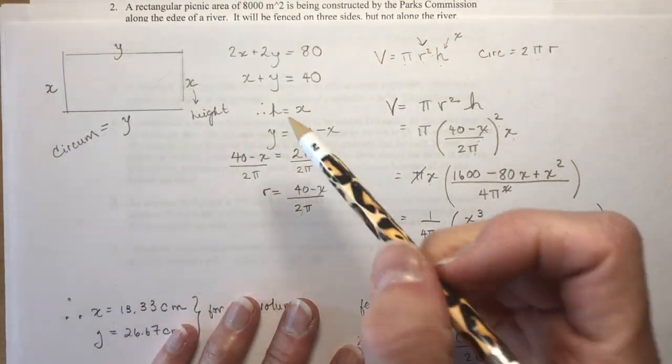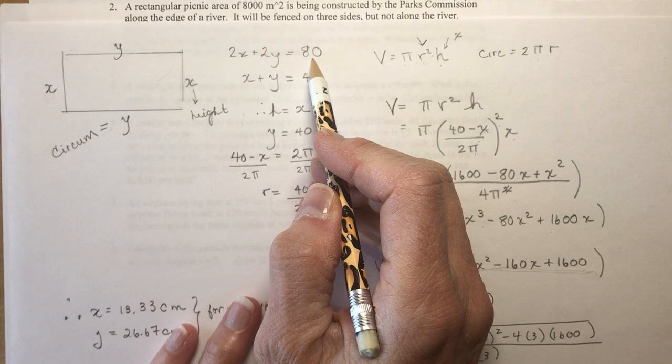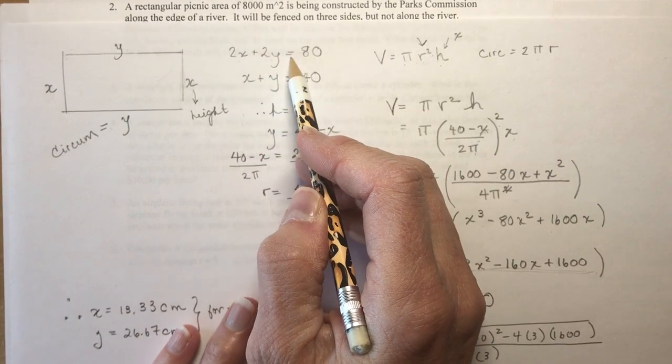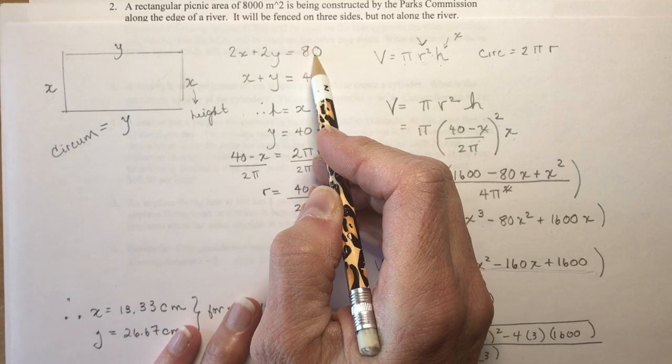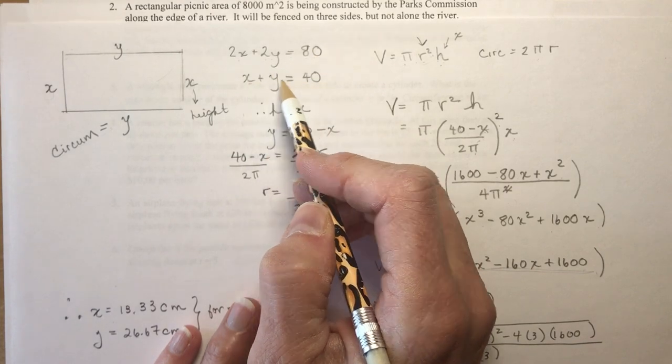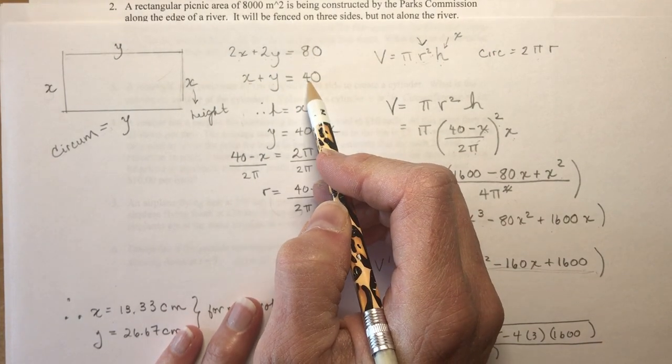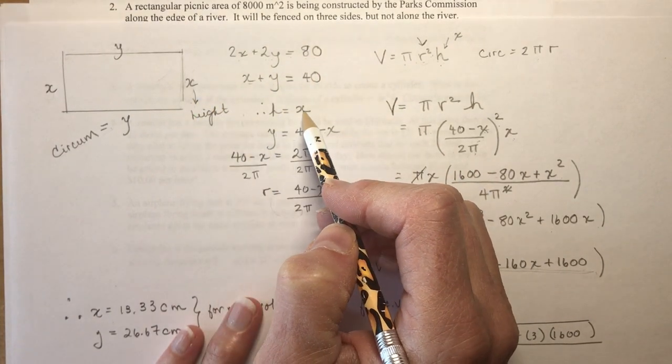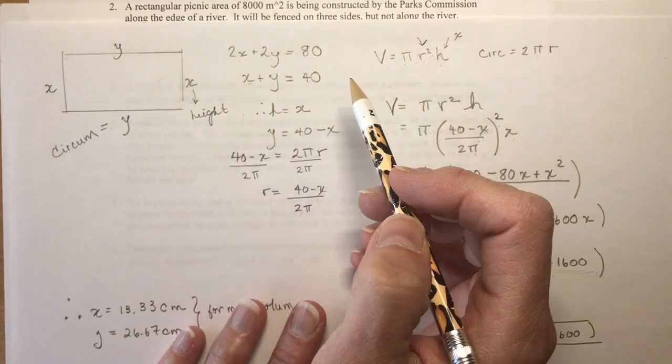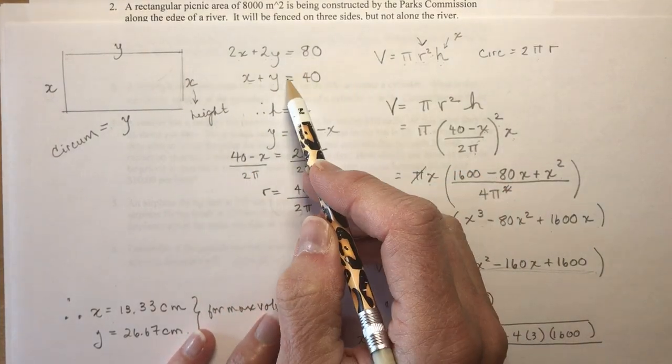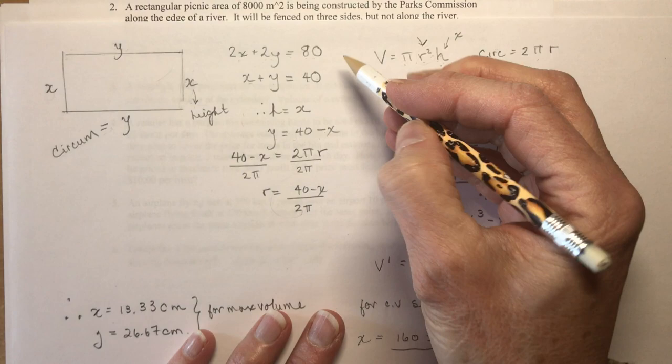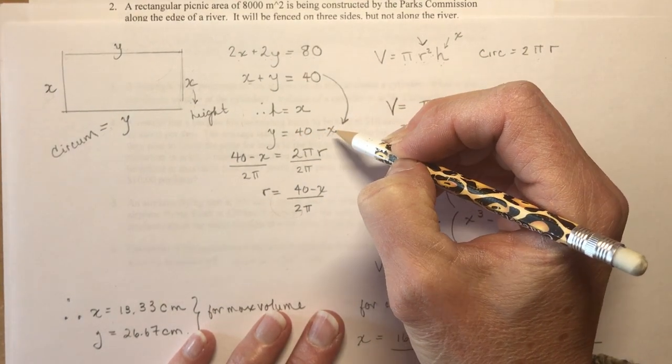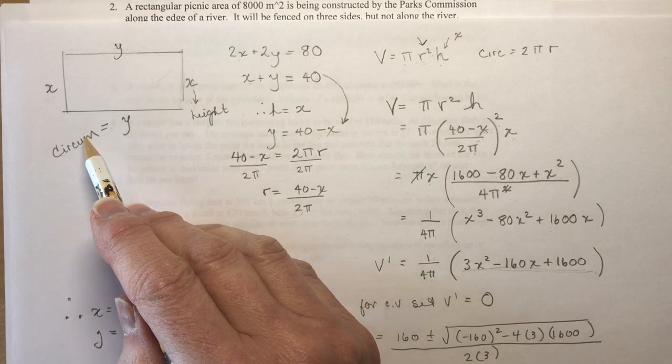I was given that the perimeter was 80, so I have two X's and two Y's that are going to add up to 80. So that means one X and one Y would be 40. Now I've declared that my height is going to be X, and that Y then would be 40 minus X.